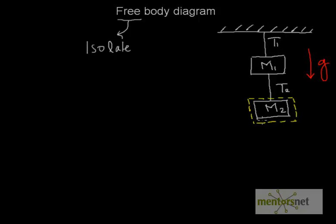This way I have isolated M2. Next, wherever there are bodies, objects, or material passing through this boundary, I cut it at that point. I can see that this rope is passing through this boundary, so I cut it here. Any other ropes passing through would also be cut. Then we take M2, which has been newly isolated, and draw it separately.